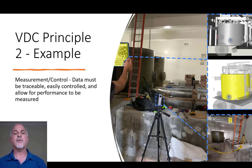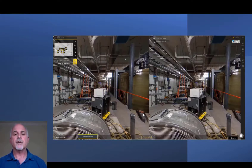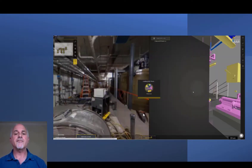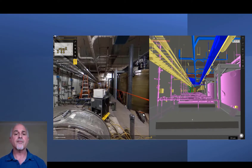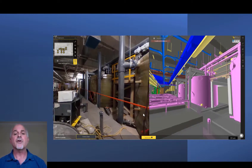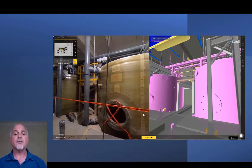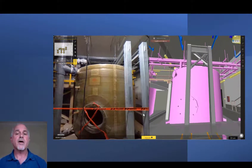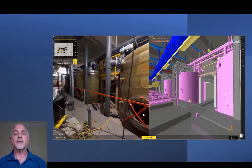The second example is about measurement and control. For this one, I'd like to utilize an example involving a pretty common technology from the construction space: the use of 360-degree cameras to generate updated photos that are uploaded to the web and integrated with the design model.